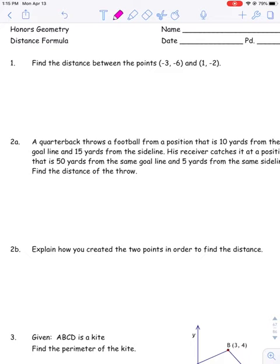So I'm going to just start with number one. You should already have all these problems completed by the time you're watching this — this is just to go over the answers. So when it says to find the distance between these points, basically we want to find how far apart the X's are from each other and how far apart the Y's are from each other, because this will end up creating our A and B leg of our right triangle. Then the hypotenuse is going to be the distance between the points.